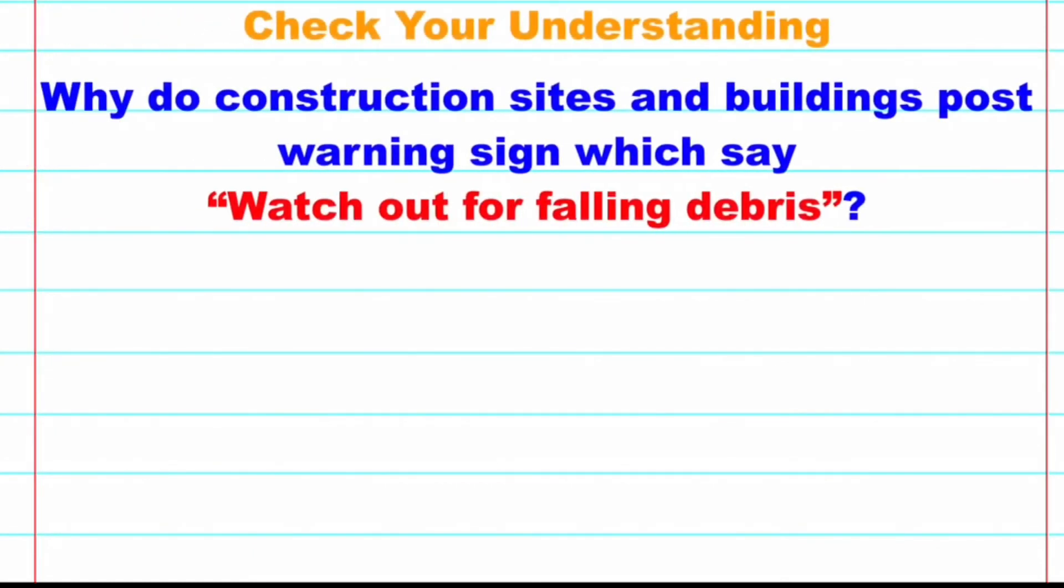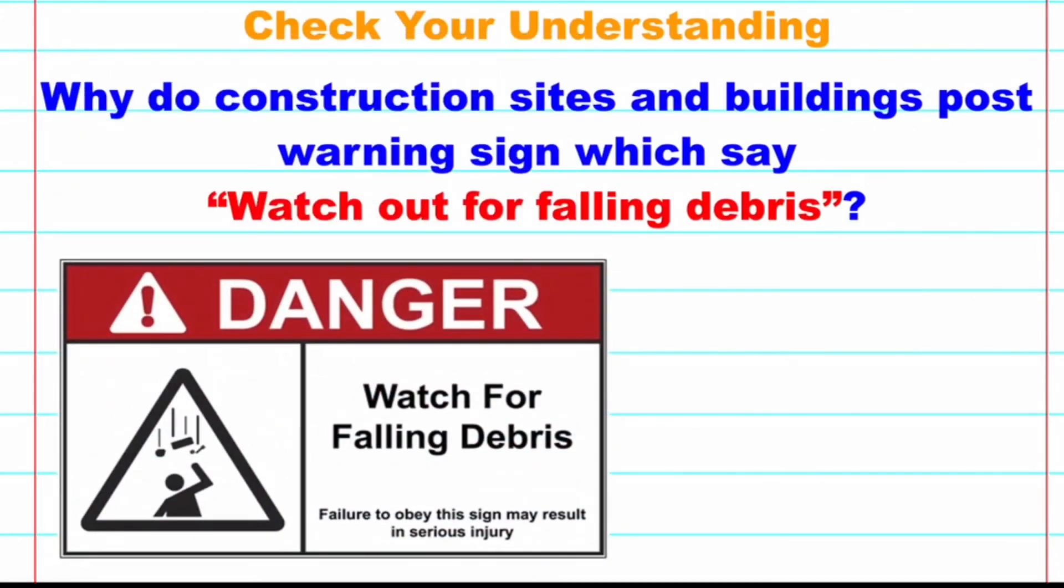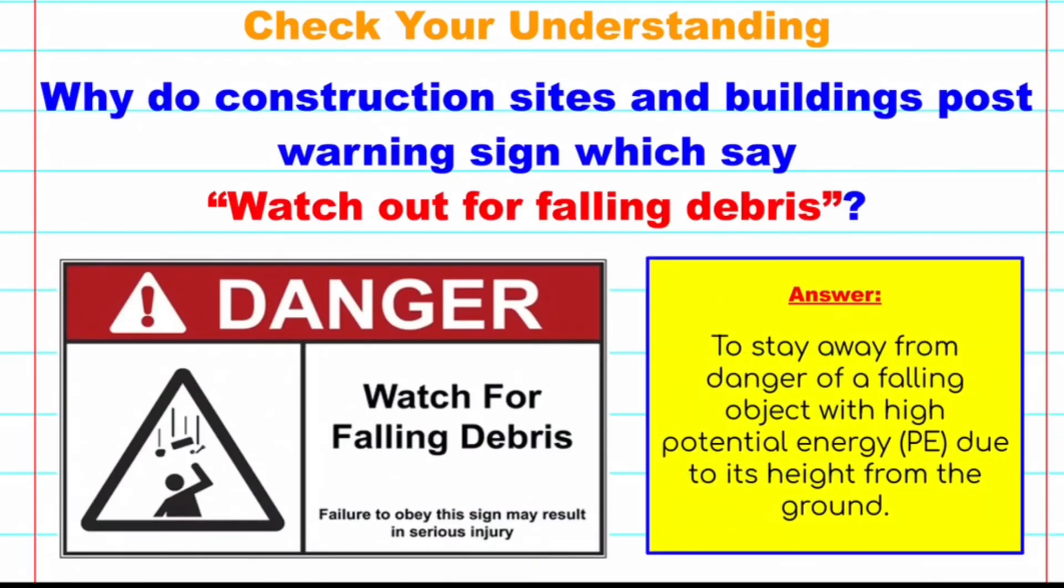Check your understanding. Why do construction sites and buildings post warning signs which say, watch out for falling debris? The answer: To stay away from danger of a falling object with high potential energy due to its height from the ground.